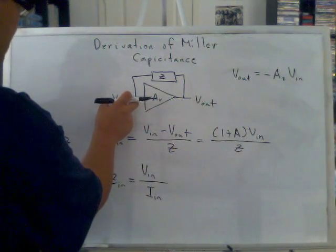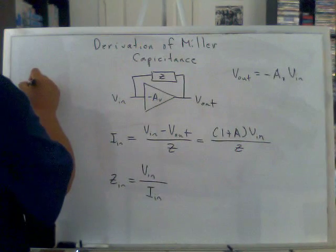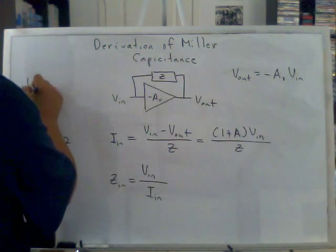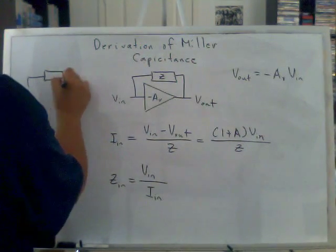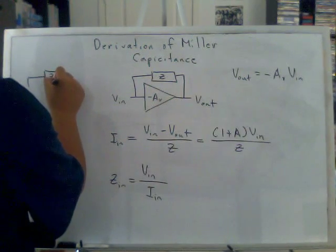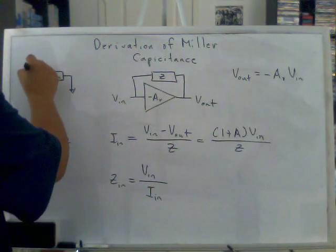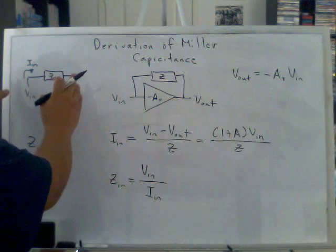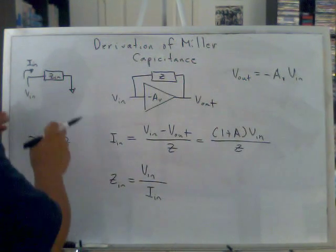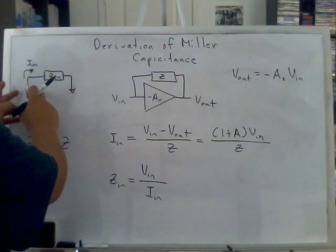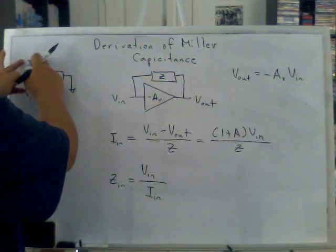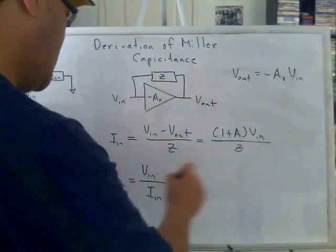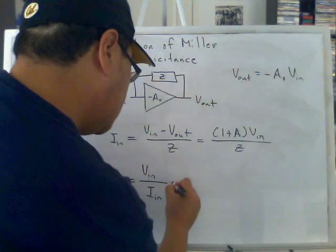The input impedance will be V in over I in. You can think of the Z in like this: V in connected to ground like this, and this is your input current. You can think of this input impedance in respect to the input voltage and the input current.